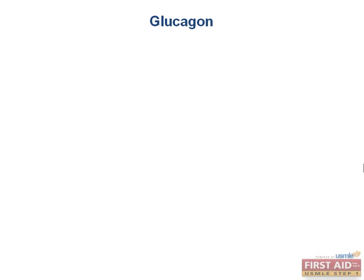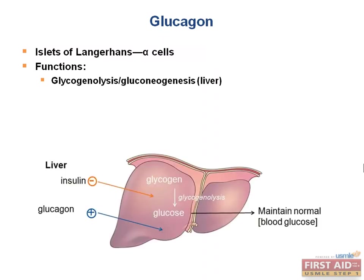Glucagon is produced by the alpha cells of the islets of Langerhans in the pancreas. Insulin and glucagon work as opposite hormones: insulin is the anabolic builder that makes glycogen, triglycerides, and protein, while glucagon is a catabolic hormone — the destroyer. Glucagon stimulates glycogenolysis and gluconeogenesis in the liver to release glucose into the blood, and although skeletal muscle also has glycogen, it is not broken down in the presence of glucagon. Additionally, glucagon stimulates lipolysis and ketone production.